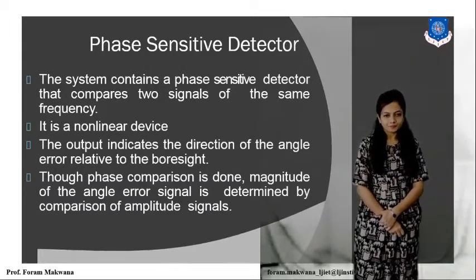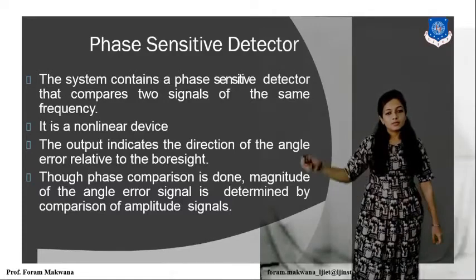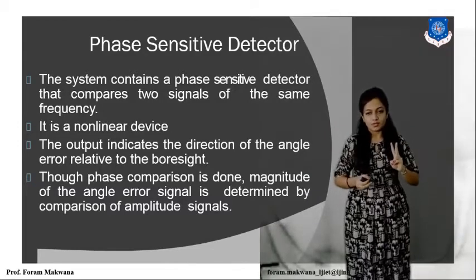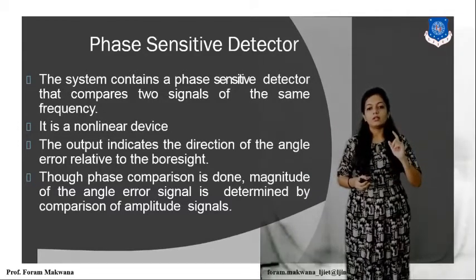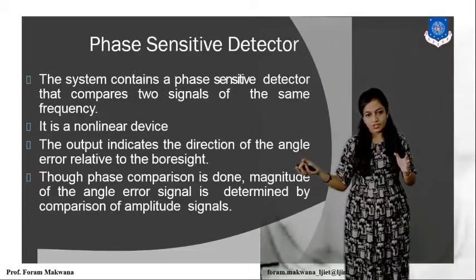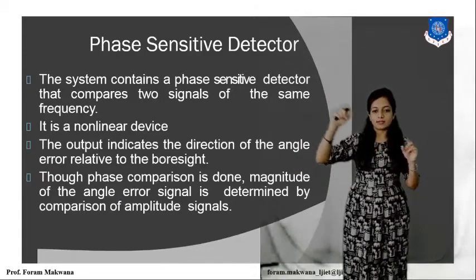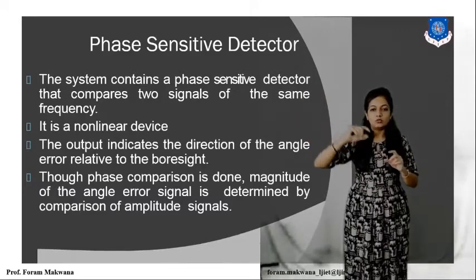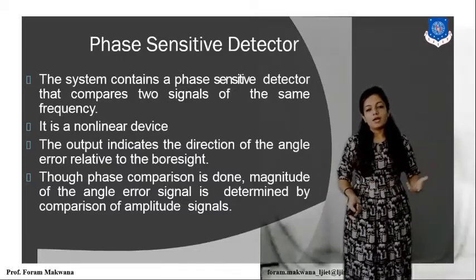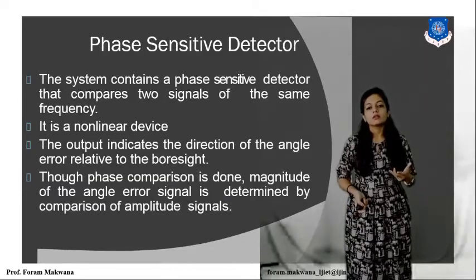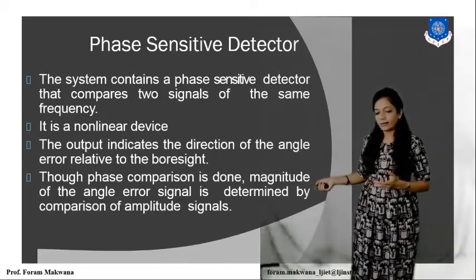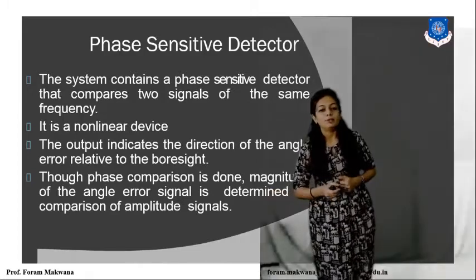The phase sensitive detector compares two signals of the same frequency. It is a non-linear device. Its output indicates the direction of angle relative to the boresight axis. The more phase comparison there is, we are able to extract the magnitude of the error signal, which is determined by the comparison of the amplitude signals.